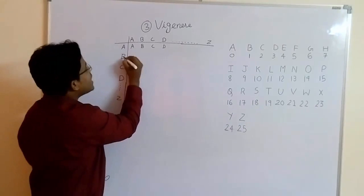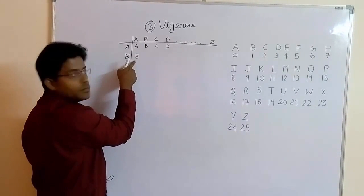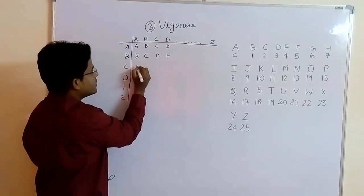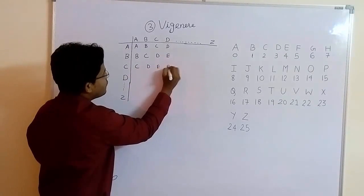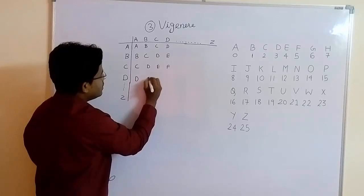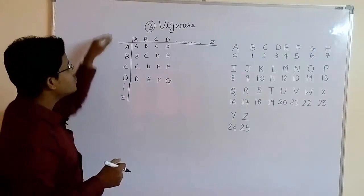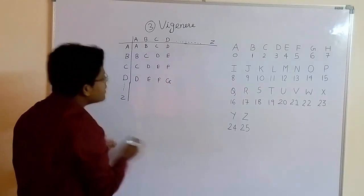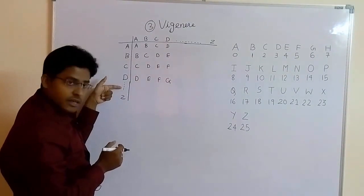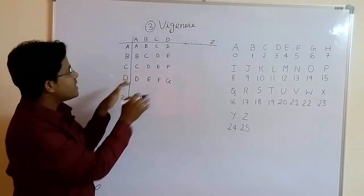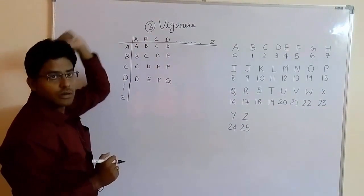Now you have to again start here from A: A, B, C, D, E. In second row you have to start from B. Remember, whatever alphabet is here, you have to start from there: B, C, D, E. Again here is C: C, D, E, F. Again here is D: D, E, F, G. When you solve the example after studying this technique, you have to make the entire table. Next will be E starting with E, F, G, H, I, and so on. For this example I am making only an A to D table, column wise and row wise.